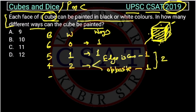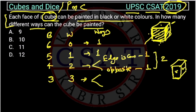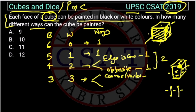The next possibility is three faces black and three faces white. Here also there are two possibilities. One is when the three white faces all meet at a common vertex or corner — like painting three faces that share one corner. The other is when the three white faces are arranged in a strip, sharing edges in sequence. So two ways: one when a corner is common, and one when edges are common.